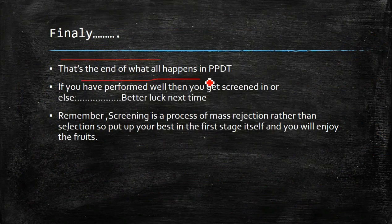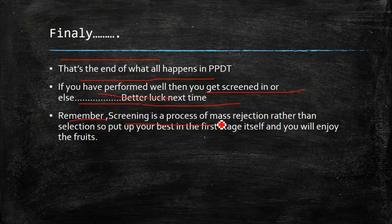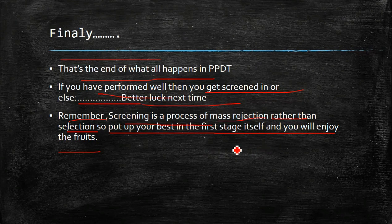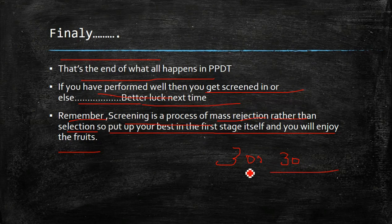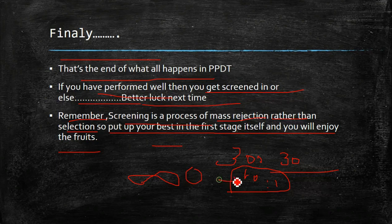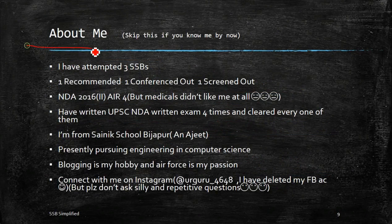That's the end of what happens in PPDT. If you have performed well, you get screened in; otherwise, better luck next time. Remember: screening is a process of mass rejection rather than selection. For technical entries, around 200–300 candidates come and they take only 30, so the ratio is roughly 10 to 1. You have to do well in the first stage — if you've prepared everything and still get screened out, it's of no use. Put your best into the screening stage.